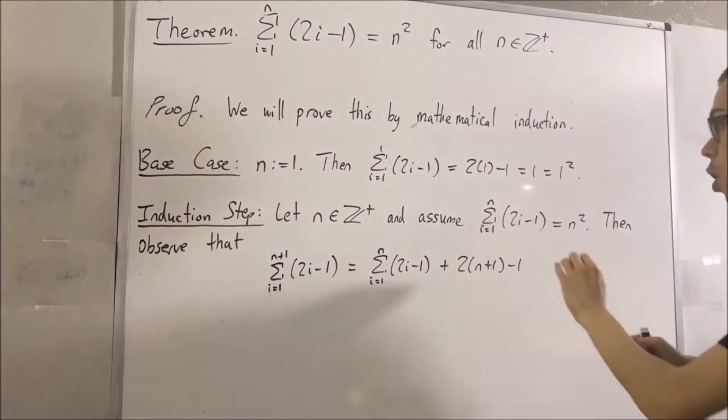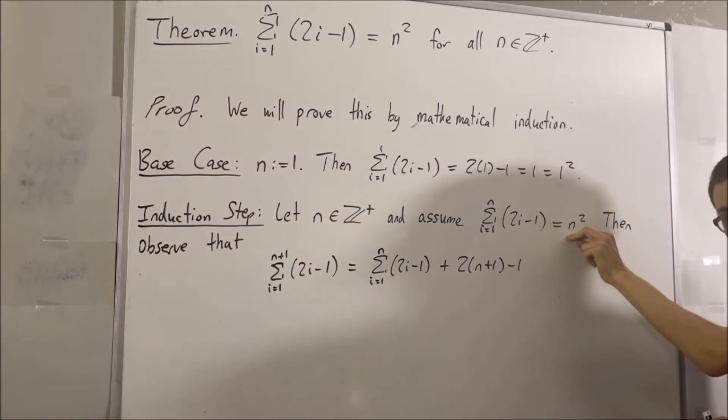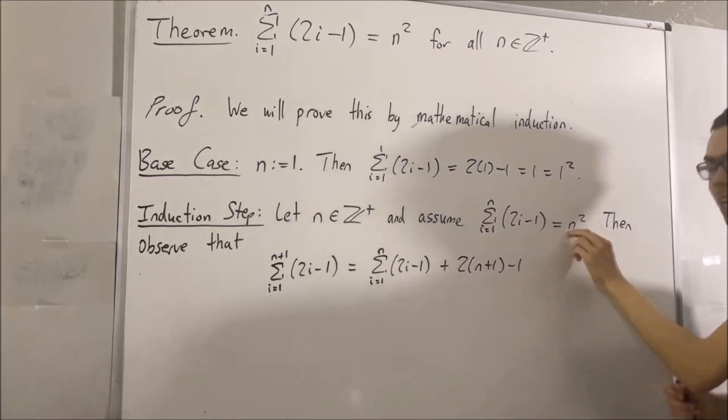But now we know that this sum is equal to n squared. Right? That's the thing we're assuming. So we can replace this sum with n squared.